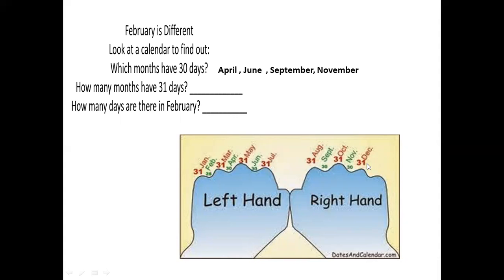And how many days are there in February? Sometimes 28 or sometimes 29. So, 28 or 29.